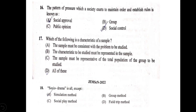Next question: the pattern of pressure which a society exerts to maintain order and establish social rules is known as — options: A) social approval, B) group, C) public opinion, D) social control. This is a direct question. The pattern of pressure a society exerts to maintain order is social control. Option D is correct.